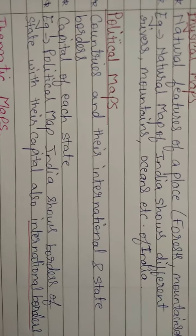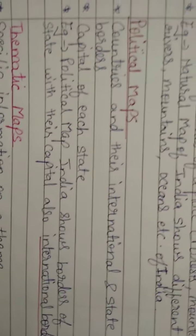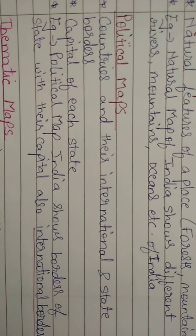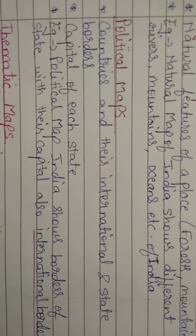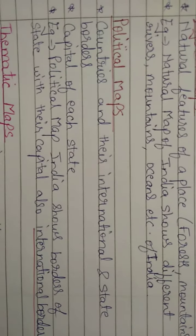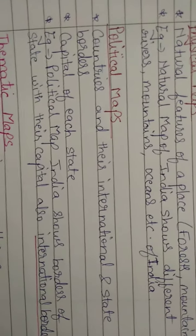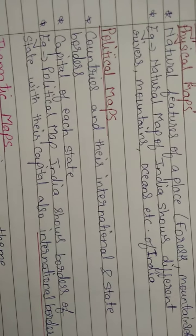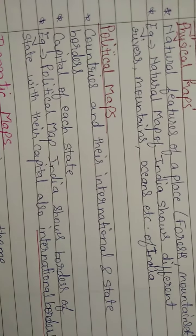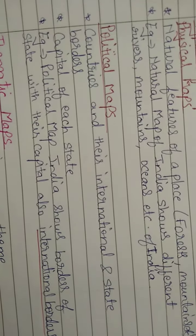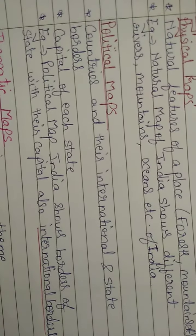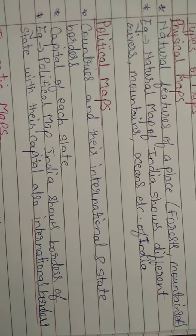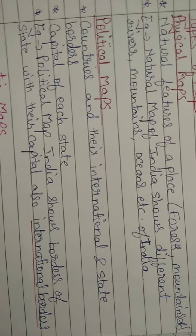The next type of map is the political map. A political map will always show you the countries and their international and state borders, along with their cities. We can also look at the capital of each state on a political map. For example, the political map of India will show you the borders of various states in India, with all the states shown along with their capital cities.